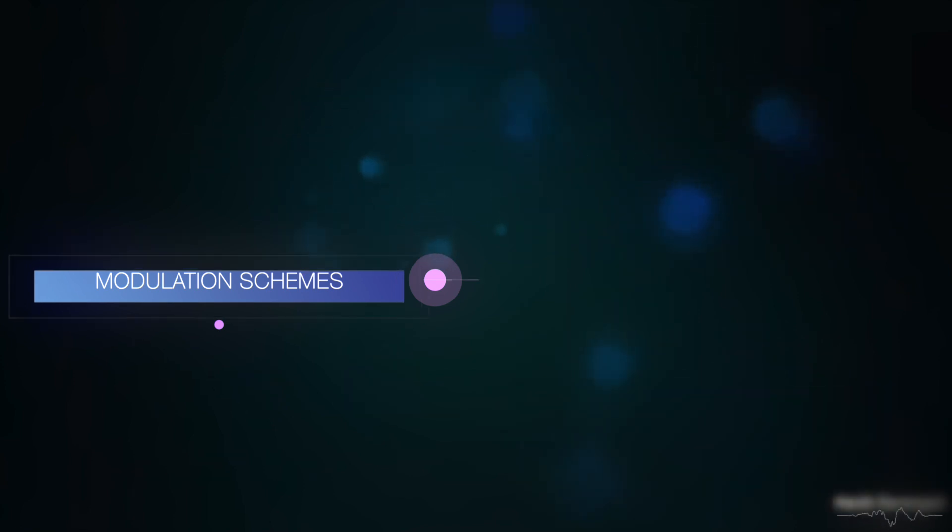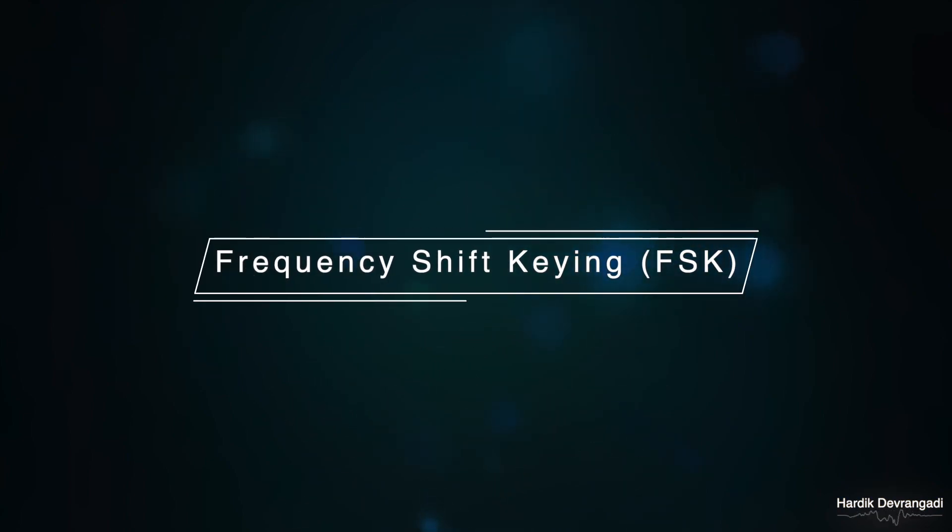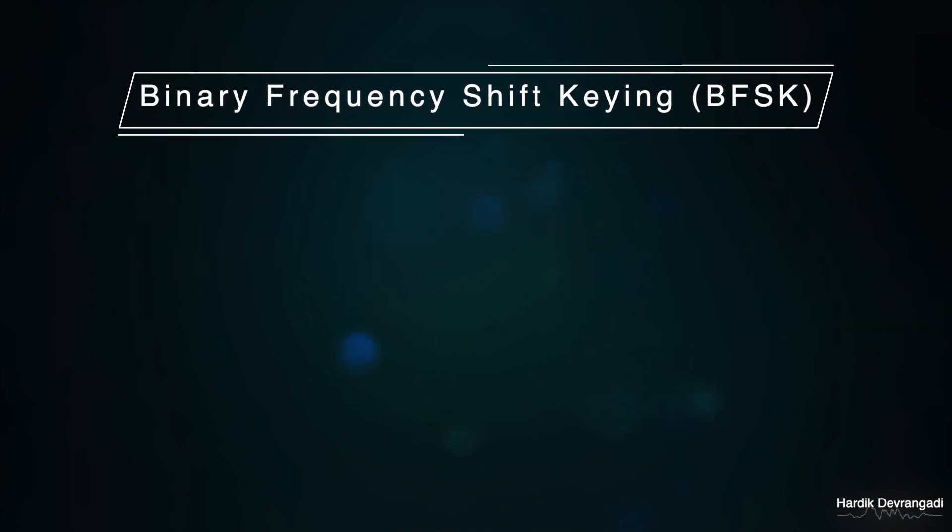Now let us discuss frequency shift keying. Frequency shift keying is the modulation of carrier signal frequencies based on the input signal. In binary FSK, the input signal is represented using two symbols, 1 and 0. These symbols are distinguished from each other by transmitting one of two sinusoidal waves that differ in frequency by a fixed amount.